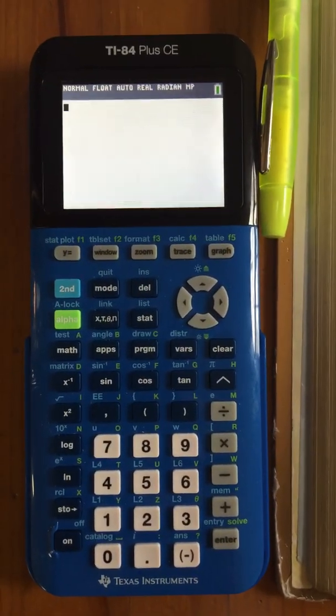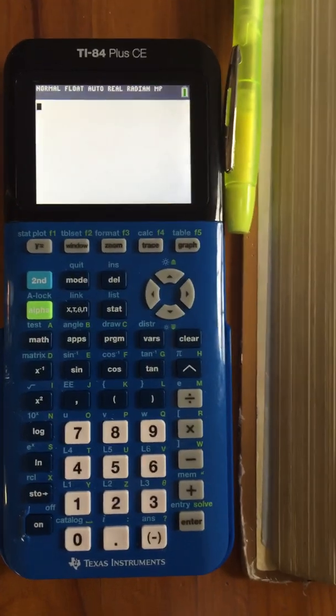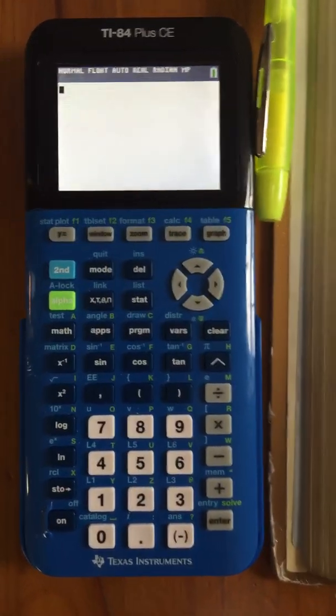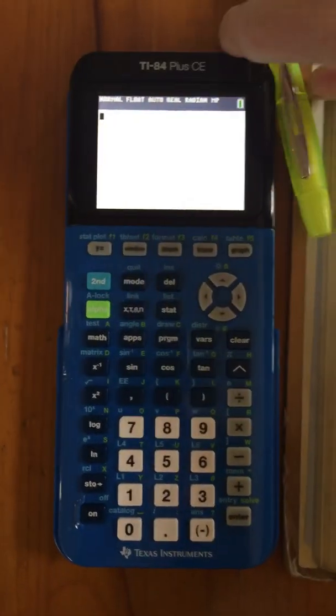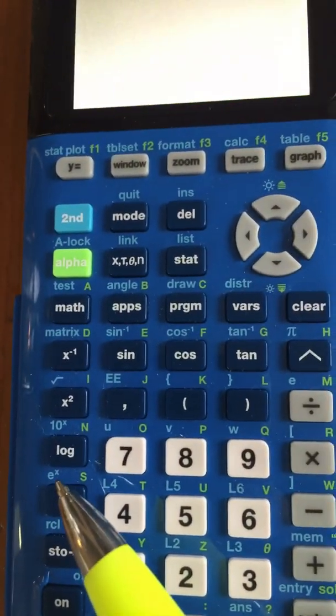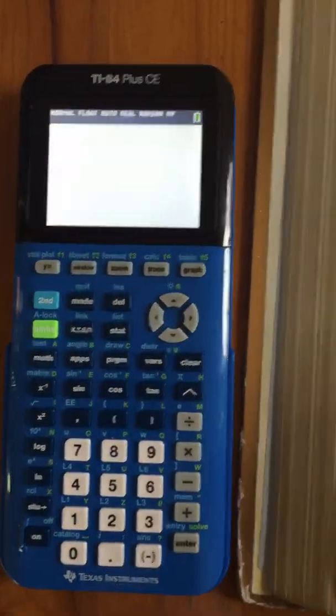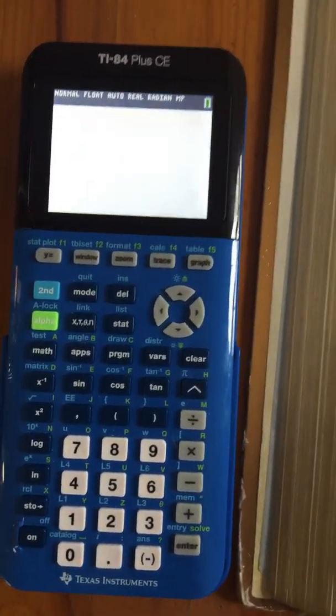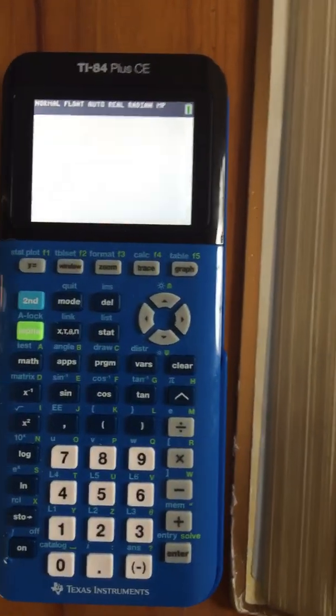What we're going to do today is graph things with natural log, e, that button in your calculator that is the second of the natural log. It's e, a number like pi, and if you want to know more about it, watch the Algebra 2 videotape that goes with that.